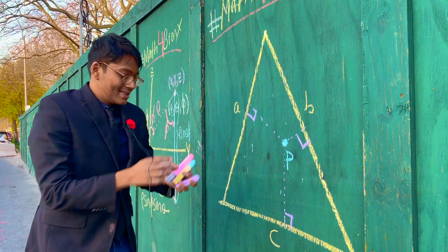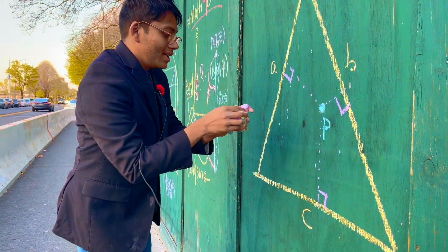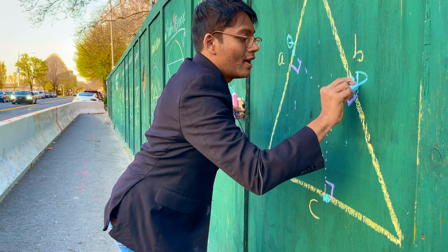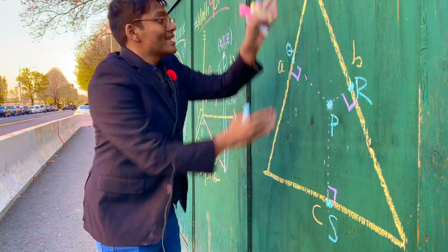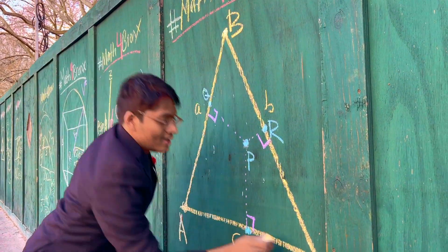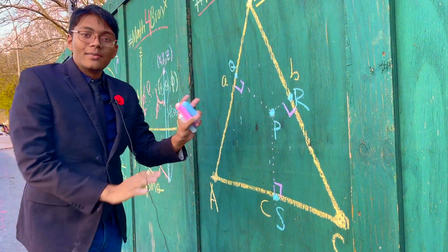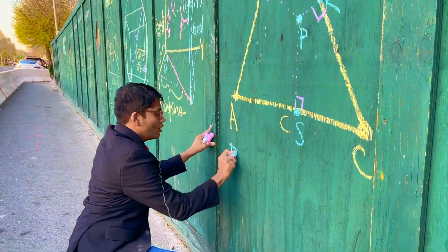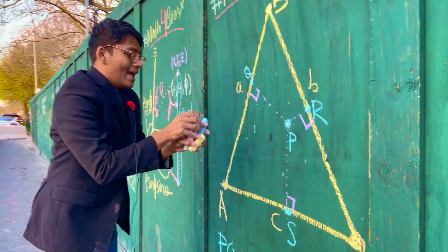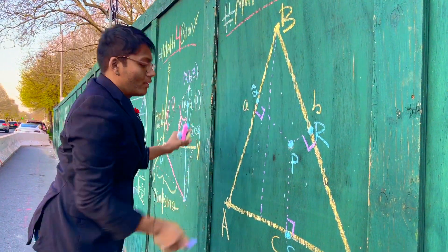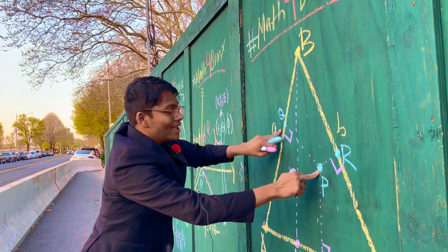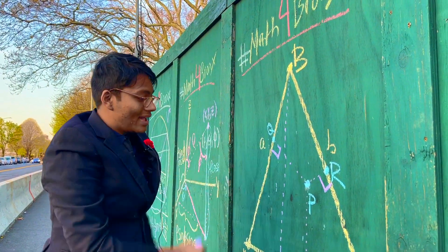Now, what Viviani's theorem says is that — let me call these intersection points Q, R, and S. So, PQ plus PR plus PS is equal to the height of this equilateral triangle. We'll call that height BH. So BH is equal to the sum of each of these altitudes: PQ plus PR plus PS equals the height of the triangle itself. That is Viviani's theorem.